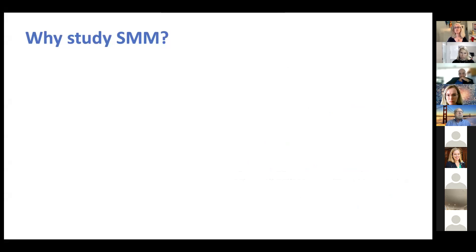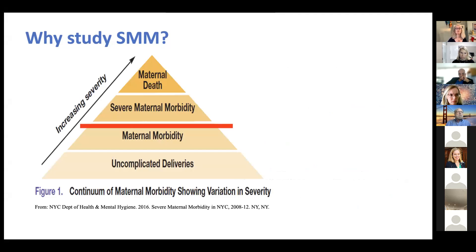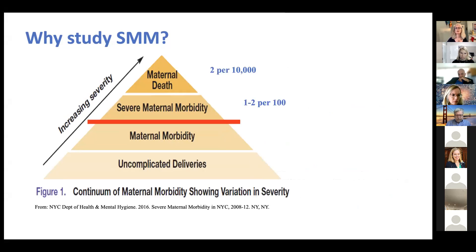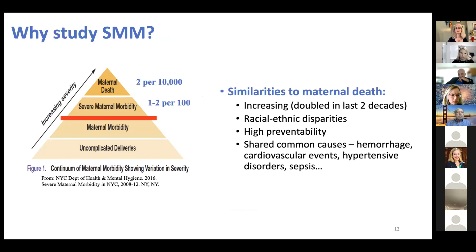Why do I focus on SMM in particular? If you think of maternal health on a continuum of severity, maternal death is at the top, and severe maternal morbidity is basically the next rung on the pyramid. It is 50 to 100 times more common than maternal death, affecting about 1 to 2% of birthing people, making it much more feasible to study. It has doubled in the last two decades, has the same stark racial-ethnic disparities, high preventability, and shared common causes including hemorrhage and hypertensive disorders.